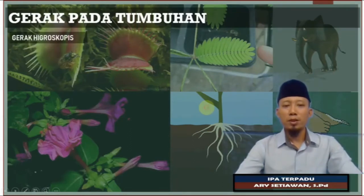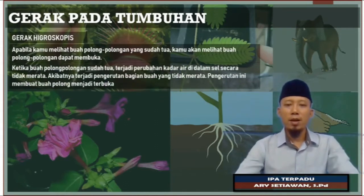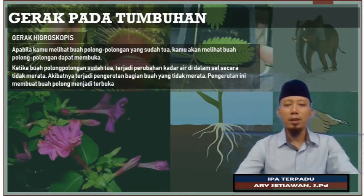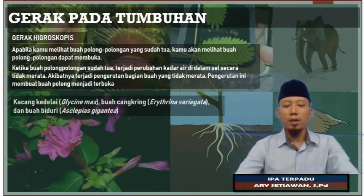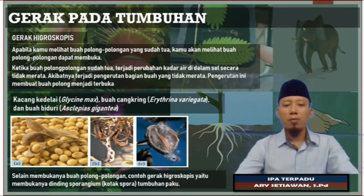Kemudian ada yang namanya gerak higroskopis. Higroskopis ini terjadi pada buah polong-polongan, misalkan pada kedelai. Disebut dengan gerak higroskopis dikarenakan ketika buah polong-polongan sudah tua, misalkan kacang kedelai, terjadi perubahan kadar air di dalam sel secara tidak merata. Akibatnya terjadi pengerutan bagian buah yang tidak merata, pengerutan ini membuat buah polong menjadi terbuka. Contoh gerak higroskopis juga pada dinding sporangium, biasanya terjadi pada kotak spora tumbuhan paku.